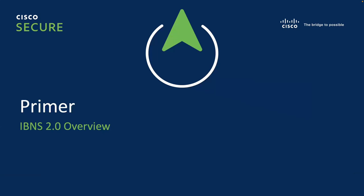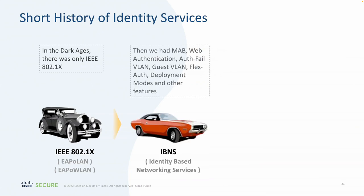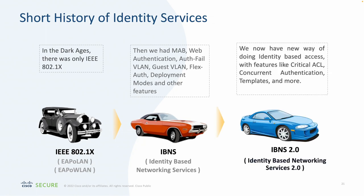From an IBNS 2.0 perspective, think of it as an evolution. In the early Cisco Clean Access days we had very basic capabilities. As we moved to ACS and the IBNS 1.0 framework toward Identity Services Engine 1.0, we got capabilities like web authentication, auth-fail VLANs, and guest VLANs. Moving to IBNS 2.0, we get interface templates, critical ACLs for AAA failures, and a graceful policy that allows us to fail through rather than tying specific port modes to an interface itself.